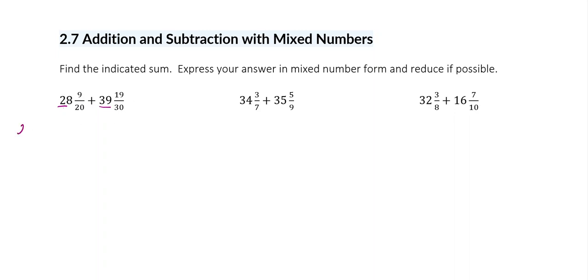So I'm going to take 28 plus 39 and I'm going to get 67. Excuse me — for some reason I can't add today.